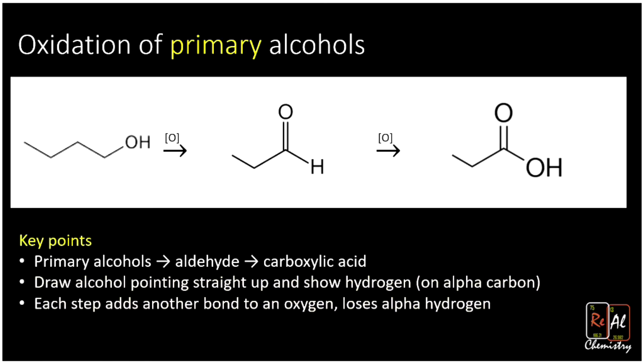The other ones are more straightforward. So when we summarize our reaction for primary alcohols, our primary alcohols go to an aldehyde. And then they go to this thing that has the OH hanging off of a C-O-O bond called a carboxylic acid. When we predict each step, we're going to want to draw our alcohol pointing straight up and show the hydrogen on the alpha carbon. Each step adds another bond to oxygen and loses an alpha hydrogen. Okay, so that's primary alcohols. Again, the hardest one.